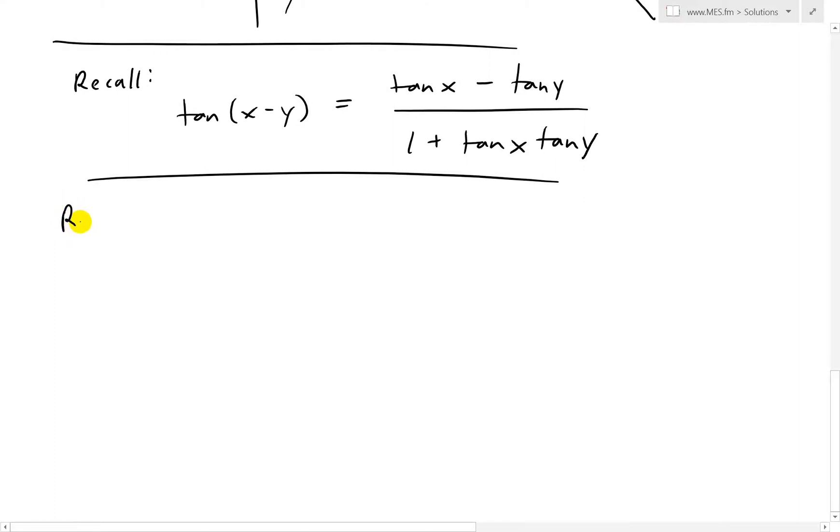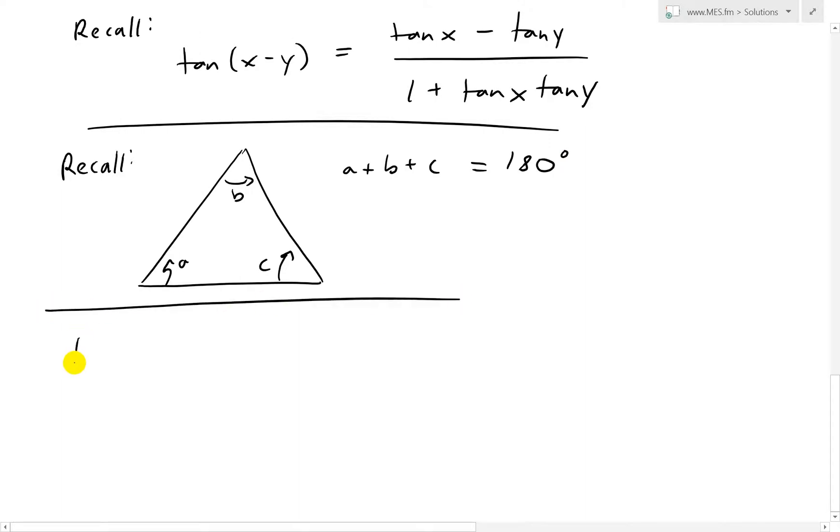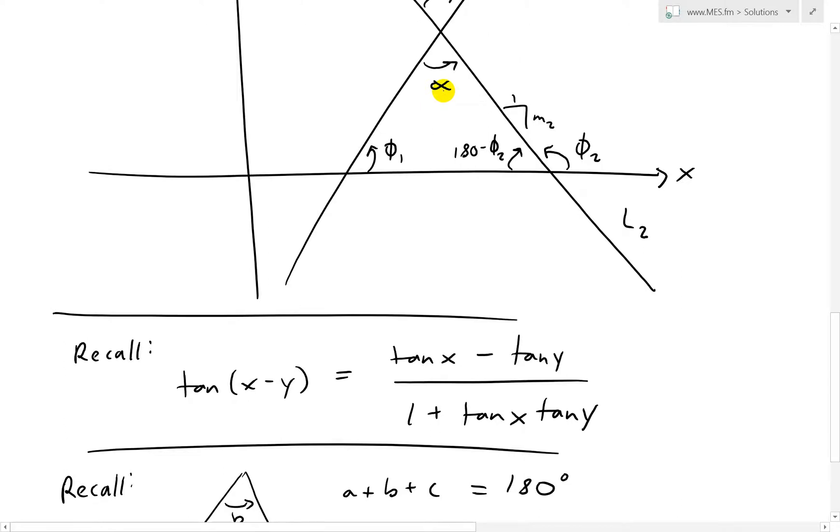Now that we have a triangle like that, recall from my earlier video on triangles: if you have a triangle with three angles a, b, and c, then the summation a plus b plus c equals 180 degrees. Thus, in our case, we have alpha plus phi 1 plus 180 minus phi 2.